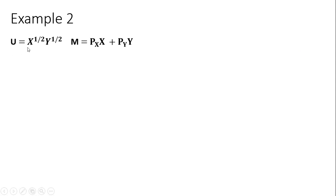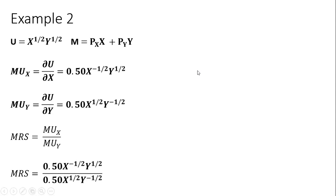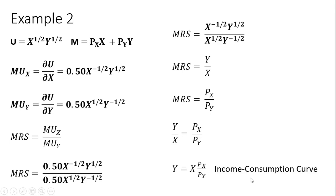Example 2: we have a slightly different utility function with different exponents. We follow the same steps — compute the marginal utility of x and y from the respective partial derivatives, then form the marginal rate of substitution. The 0.5 terms cancel, and applying the rules of exponents, the MRS simplifies to y divided by x. Setting that equal to the price ratio and solving for y gives us another income consumption curve.